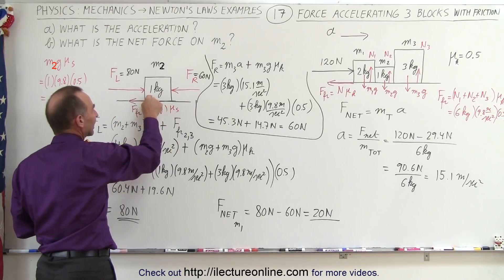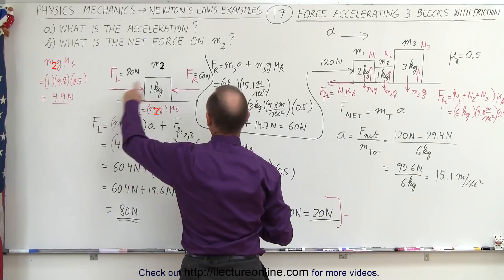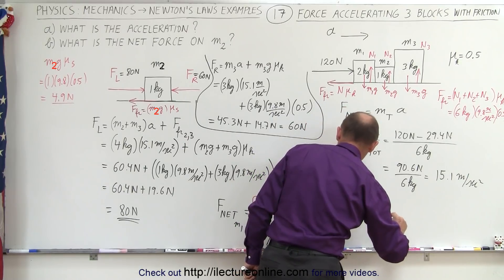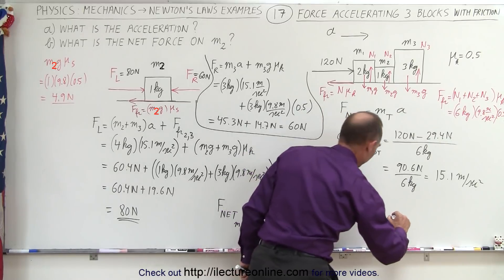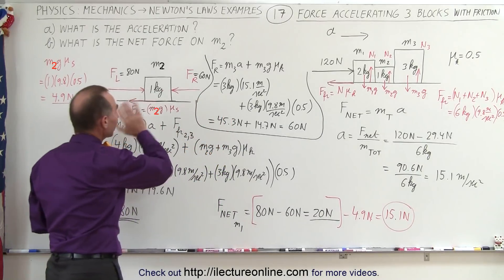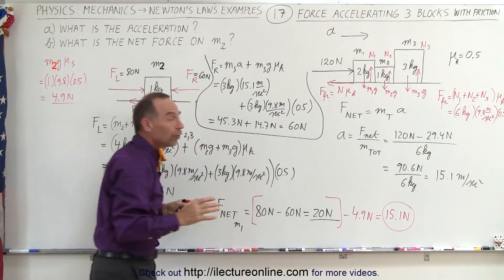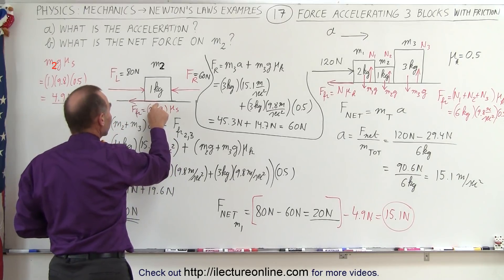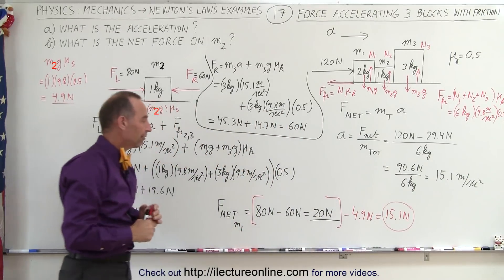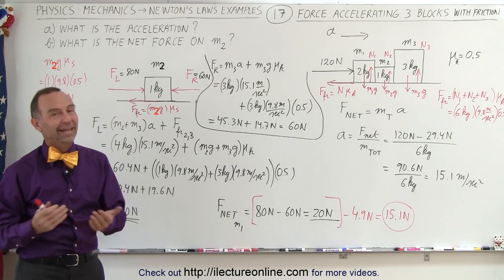The friction force on M1 equals M1 × g × mu sub k, which is 1 × 9.8 × 0.5 = 4.9 Newtons. So the true net force on M1 is 20 Newtons minus 4.9 Newtons, which equals 15.1 Newtons. We subtract the difference between the forces pushing in both directions — 80 minus 60 equals 20 Newtons — then subtract the 4.9 Newton friction force on M1 itself to get a net force of 15.1 Newtons. That's how it's done.